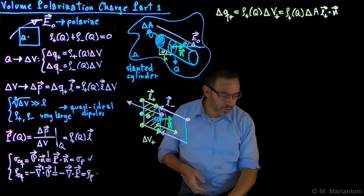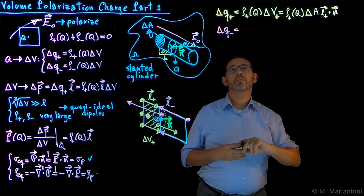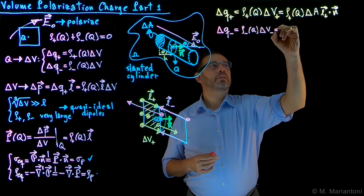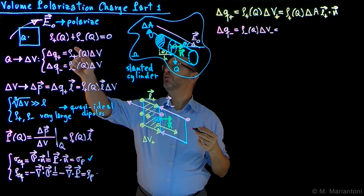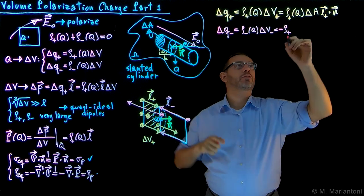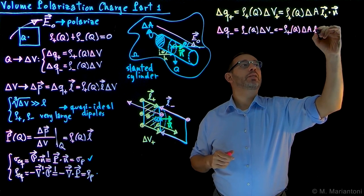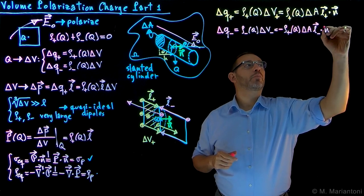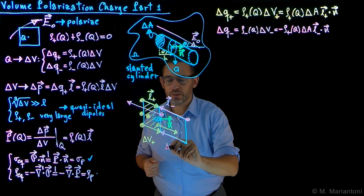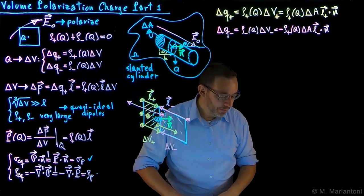What about delta Q_minus? Delta Q_minus equals rho_minus times delta V_minus, which is rho_minus times delta A times (L_minus · N). From charge neutrality, rho_minus equals minus rho_plus — and this holds also in the case of polarization. So delta Q_minus equals minus rho_plus at point Q times delta A times (L_minus · N). Now that we have these two charges, we can sum them to find the net charge.